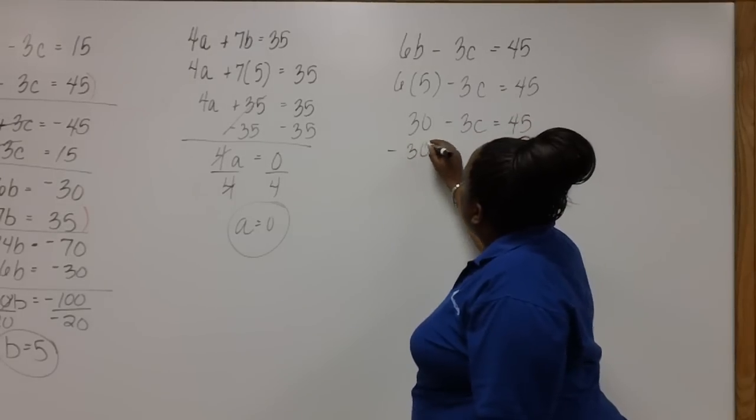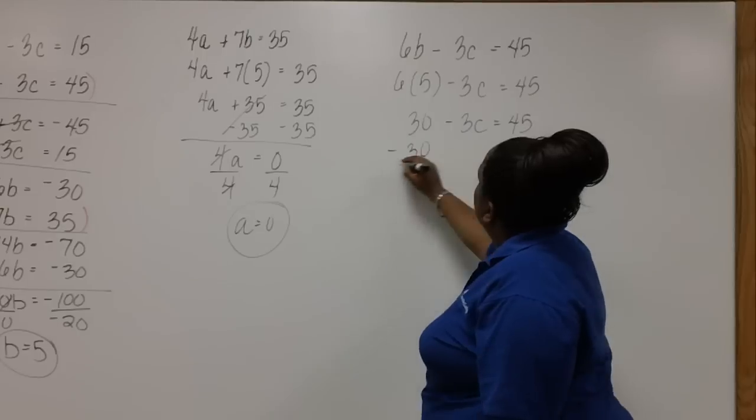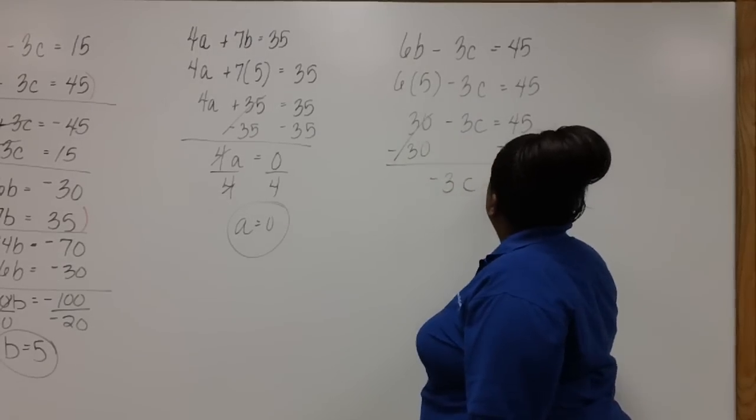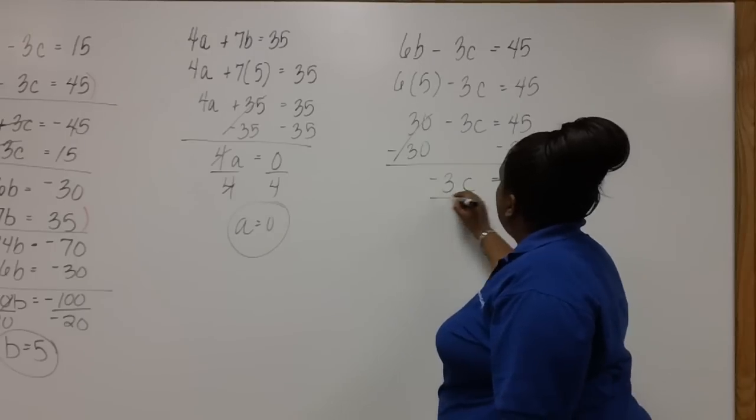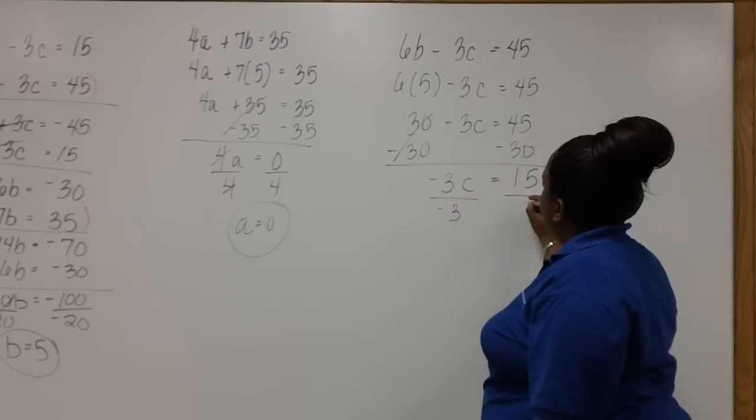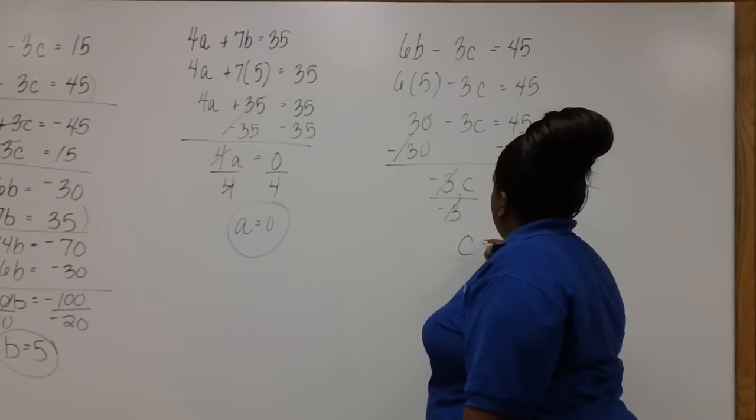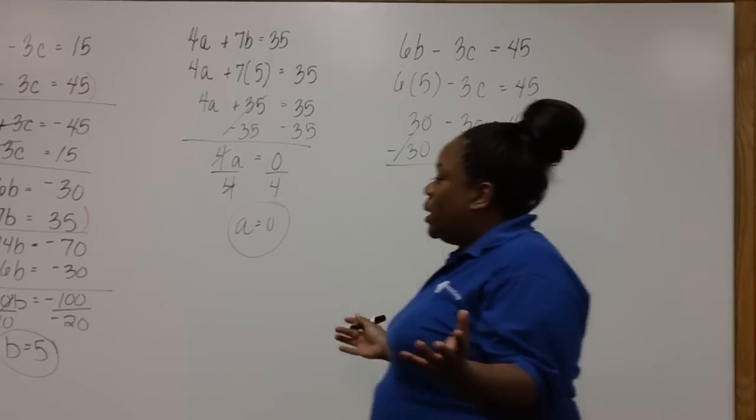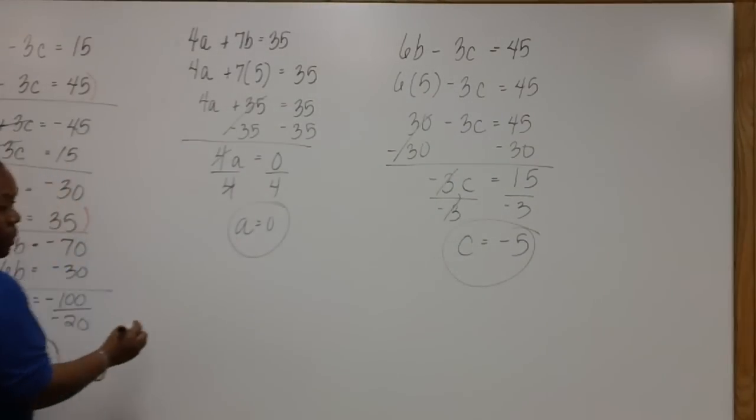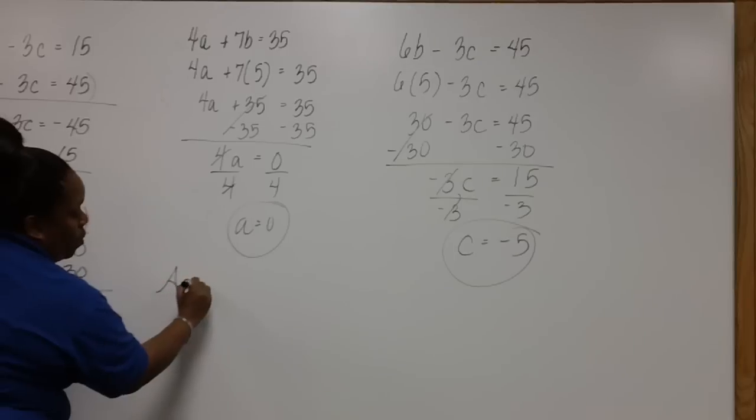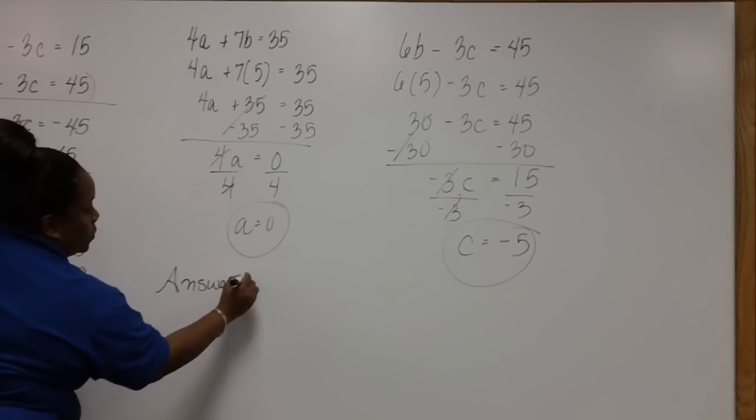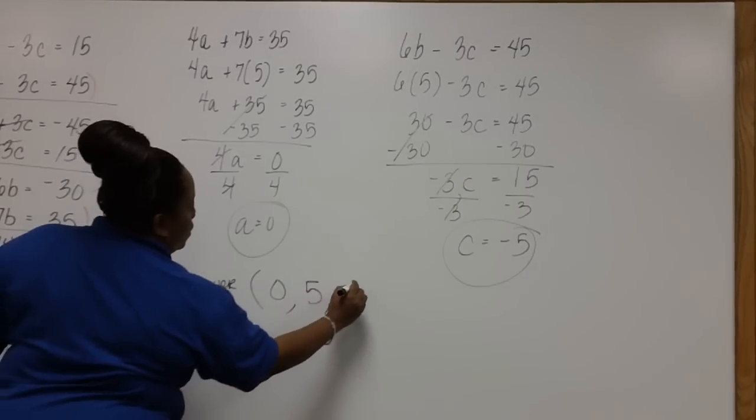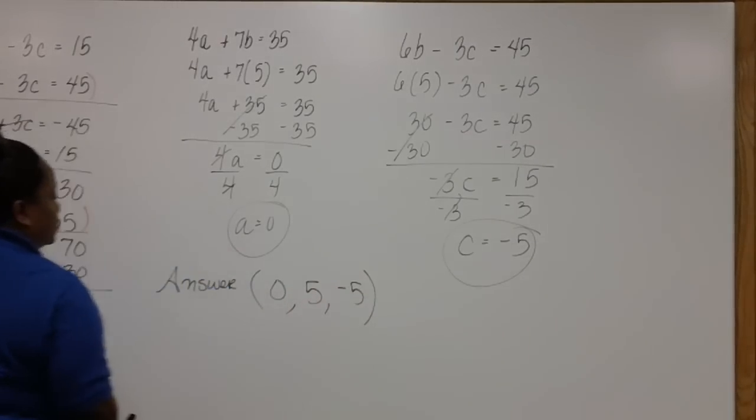Subtract 30 from both sides. And after dividing both sides by negative three, we find that C is equal to negative five. So our answer as an ordered pair in alphabetical order is zero, five, negative five.